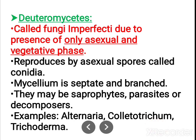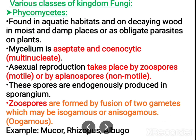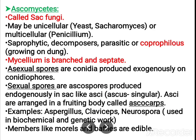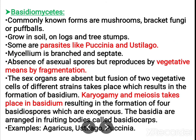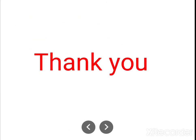So we studied four classes of fungi. First, phycomycetes. Next, ascomycetes and basidiomycetes. When fungi do not show any sexual phase, they are kept under deuteromycetes. Today we are concluding up to this. We will meet in the next class. Thank you.